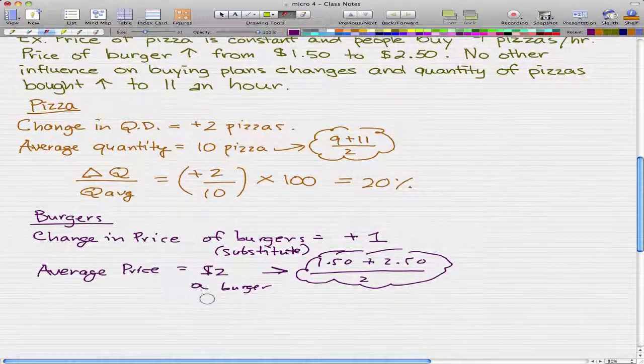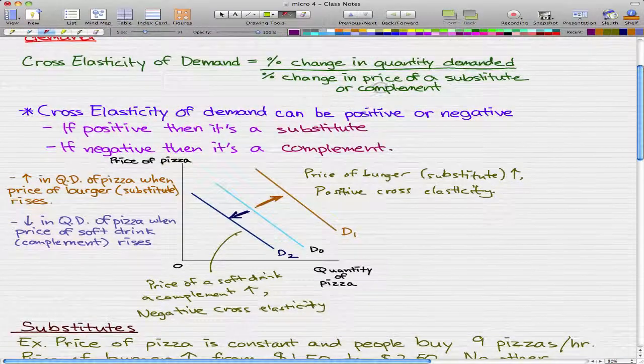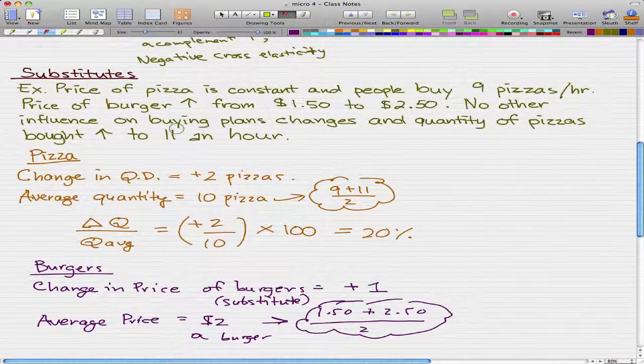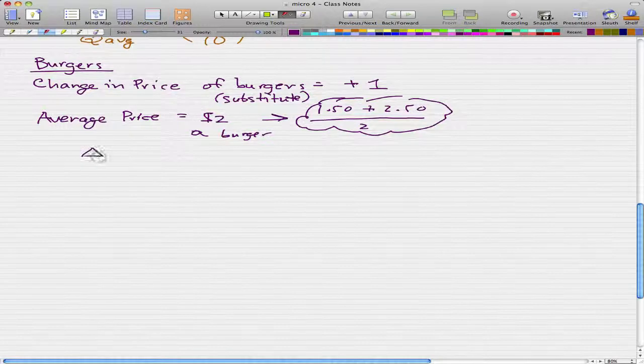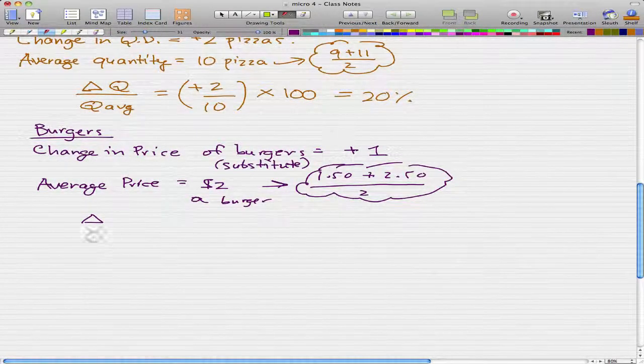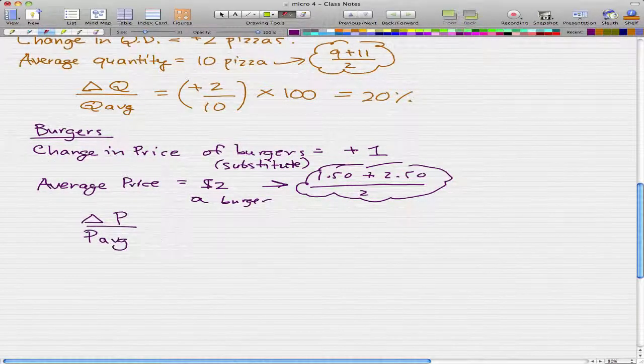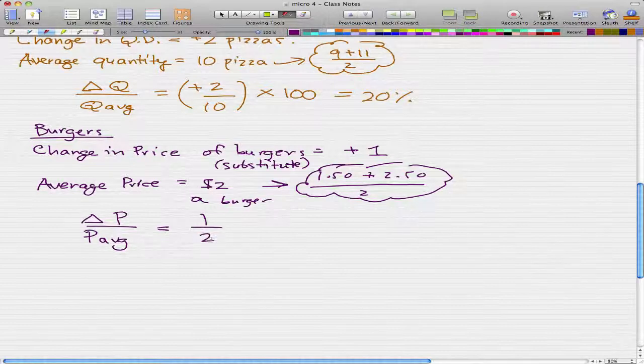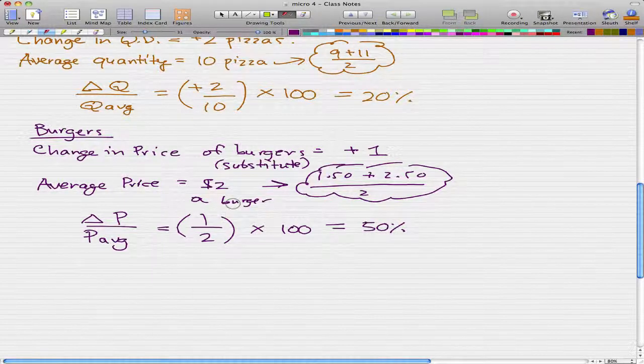Now the percentage change in price. The percentage change in price of a substitute or complement is ΔP over P average. We found that the change in price was actually a dollar, so we have 1 in the numerator and the average price is $2. That is 0.5, and we take that times 100 to get the percentage which results in 50%.